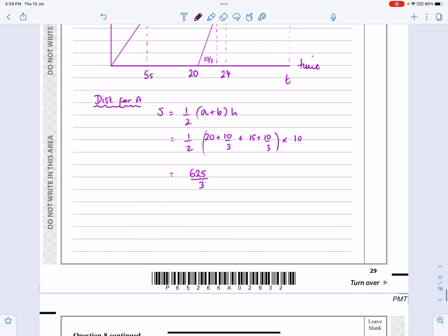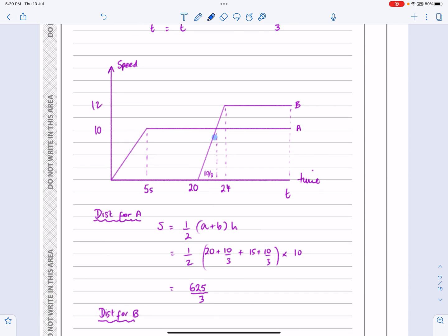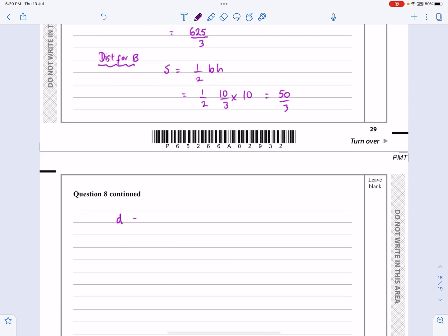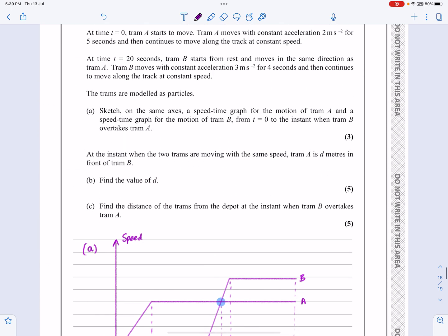If I do the distance for B, that's slightly simpler to do, because the distance that B has travelled is just going to be that triangle in there. So the distance for B is going to be half base times height. So S is going to be a half, and it's just 10 over 3 times 10 there, which works out to be 50 over 3. Now don't forget to answer the question. D that we're looking for is one of those lengths minus the other length. We want to know how far ahead it is. Obviously it's 191 and two thirds metres ahead at this stage.